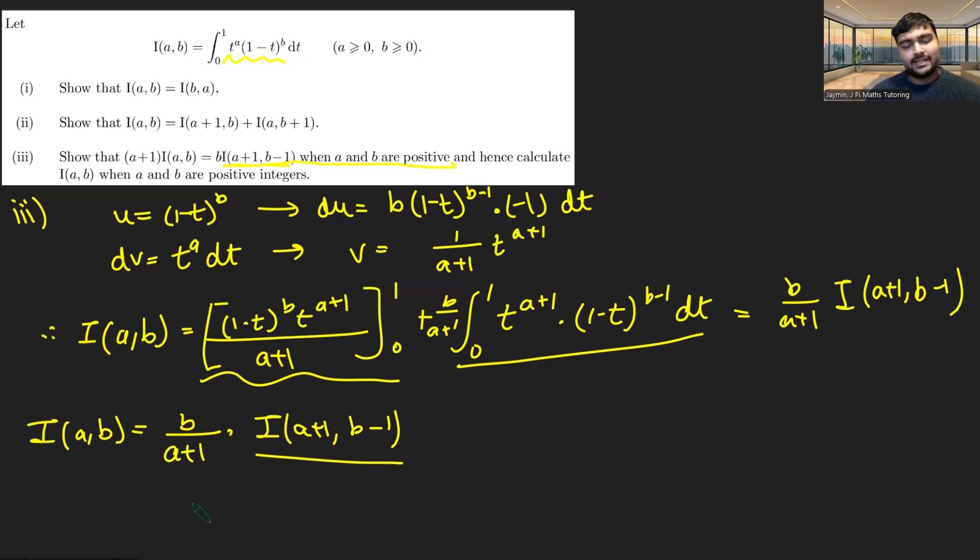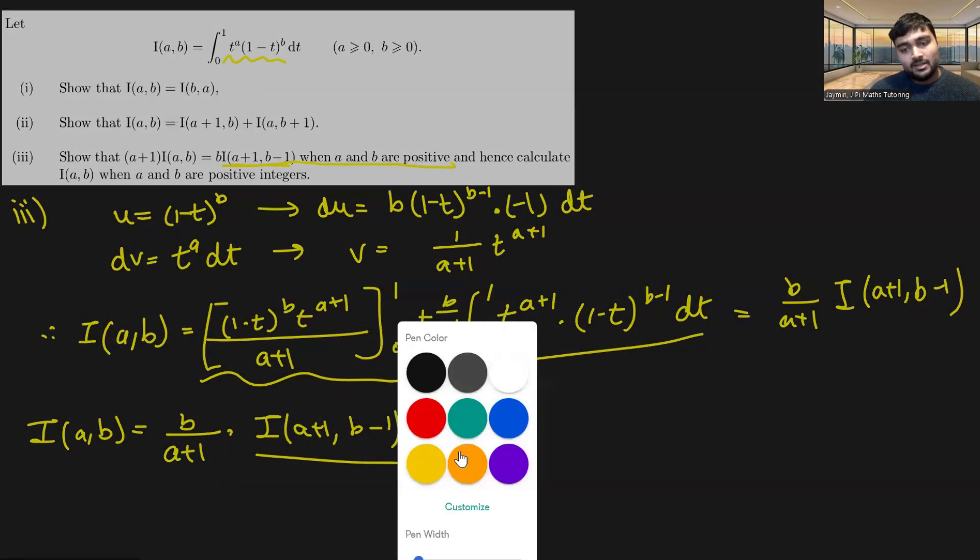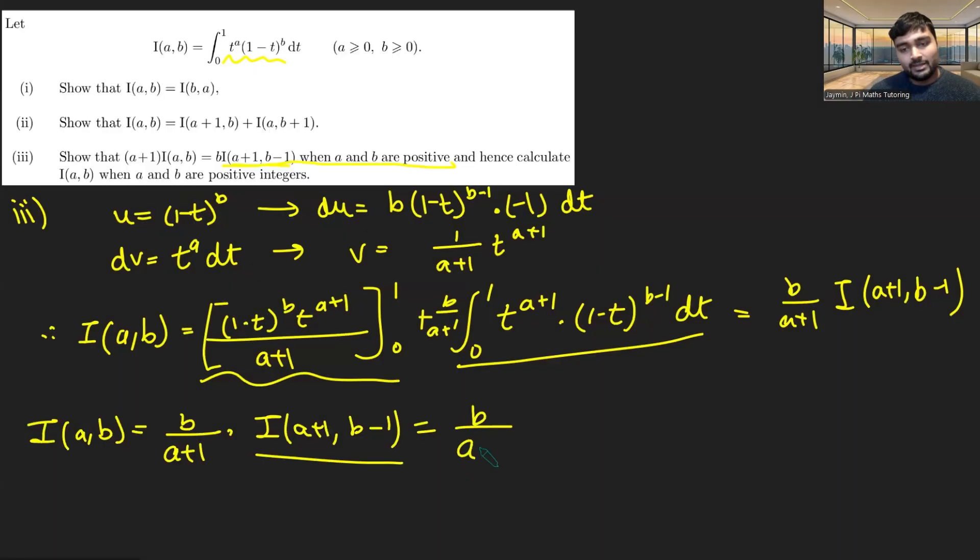And so therefore, this thing here, I(a+1,b-1) should be some constant multiplied by I(a+2,b-2). So adding 1 to the a value and taking 1 away from the b value. So this is going to be b over a+1 multiplied by something, we'll work out what this is in a moment, times I(a+2,b-2).